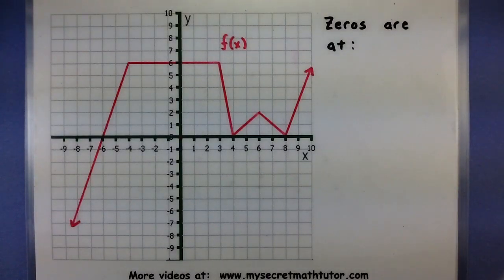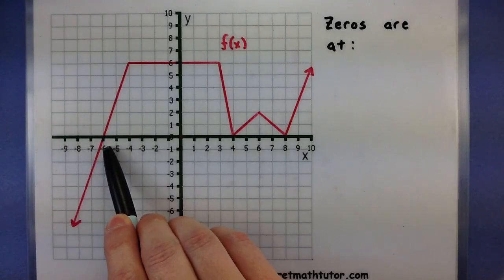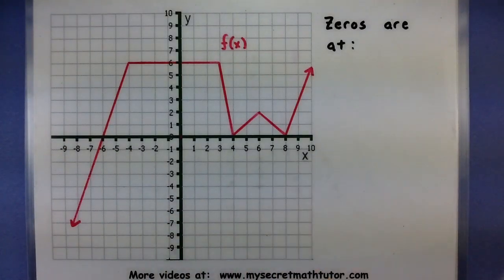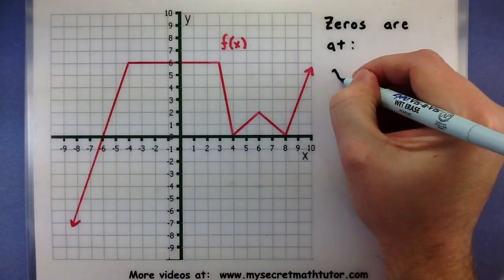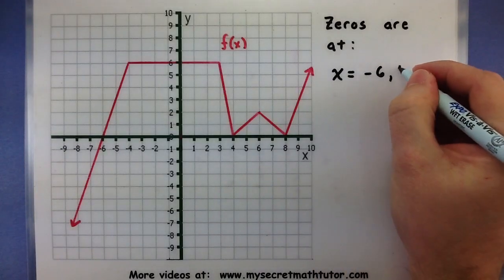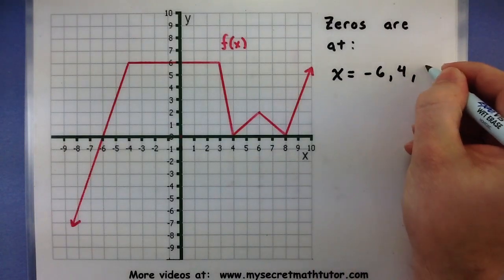So we can see that the function crosses the x-intercept or x-axis at negative 6, it touches at 4, and it touches at 8. So I'd say that the zeros of the function are at x equals negative 6, another one at 4, and one more at 8.